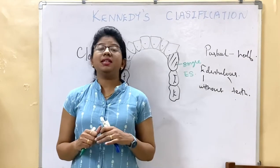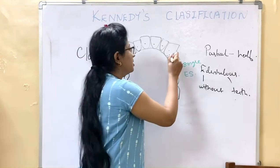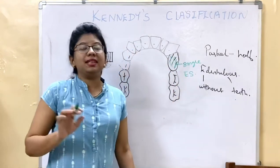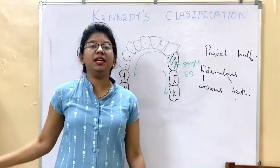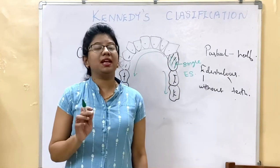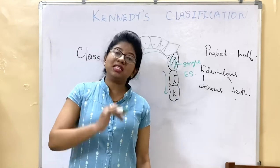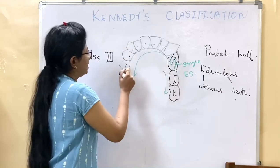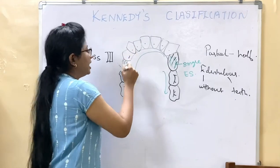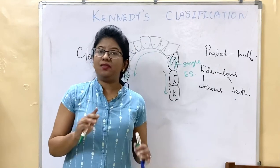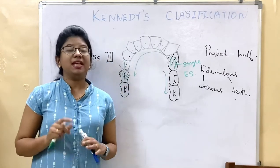In Class 3, there is a single edentulous space with teeth present anterior as well as posterior to it. The single space can be anywhere, but it will be a single space with teeth present both anteriorly and posteriorly. That is Class 3.